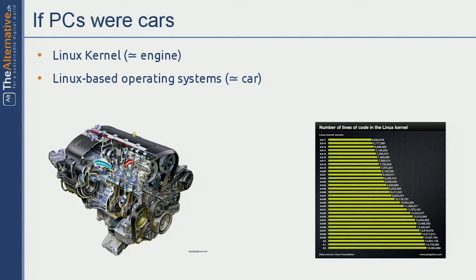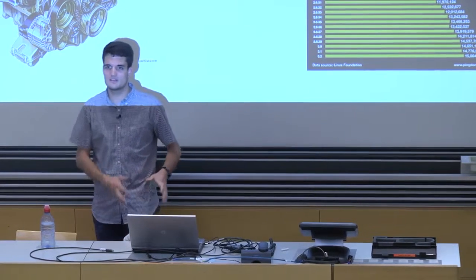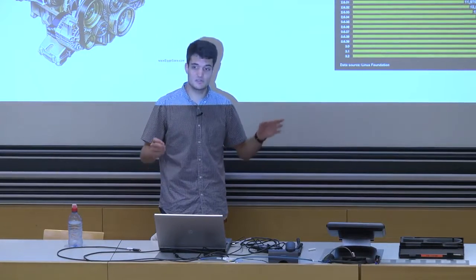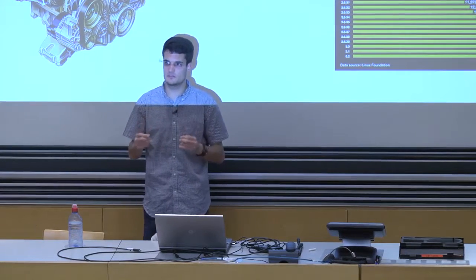If PCs were cars, Linux would not be an operating system — it would not be a car, it would just be an engine. Linux is a kernel. A kernel is the basic thing within an operating system that drives everything. All the software, all the processes communicate with it. The kernel also supervises everything and checks that nobody does something they're not allowed to. It serves as a base and coordinates everything. But there's not much you can do with an engine alone — you also want tires, a steering wheel, a gas tank, and so on. That's what makes a car.